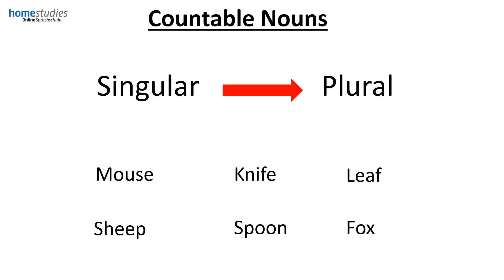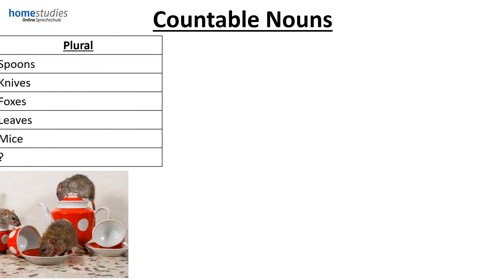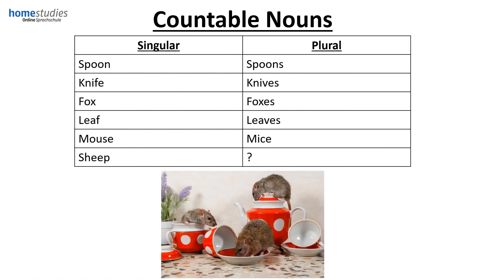Okay, let's have a look at the answers. Spoon becomes spoons; knife becomes knives; fox becomes foxes; leaf becomes leaves; mouse becomes mice. Now be careful of the spellings and look at the word mouse — this becomes mice. We do not say three mouses, we would say three mice, a little bit like the nursery rhyme the three blind mice.